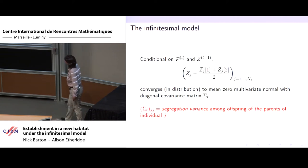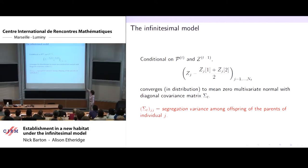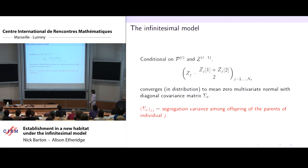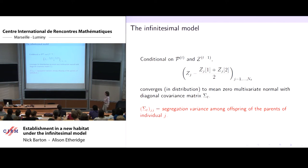The infinitesimal model states: conditional on knowing the pedigree and all trait values up to the parental generation, if I look at the distribution of trait Z_J minus the mean of its parents, for all J up to the current population size, that will converge as M (number of loci) goes to infinity to a mean-zero multivariate normal whose covariance matrix is diagonal. The entries on the diagonal are the segregation variance: (1 - F_IJ) times the variance in the ancestral population — how much variation is reduced by the reproduction of the parents of individual J.